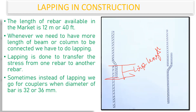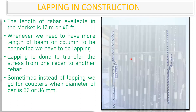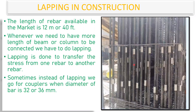Sometimes instead of lapping we go for couplers. Lapping is used up to 20 or 25 mm diameter bars, but when the bar diameter is 32 or 36 mm, we use couplers instead. A coupler is a small mechanical device that holds the top and bottom bars together to transfer stress from one bar to the other without any overlap.